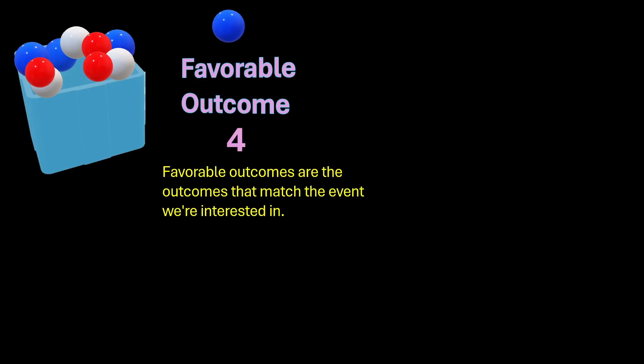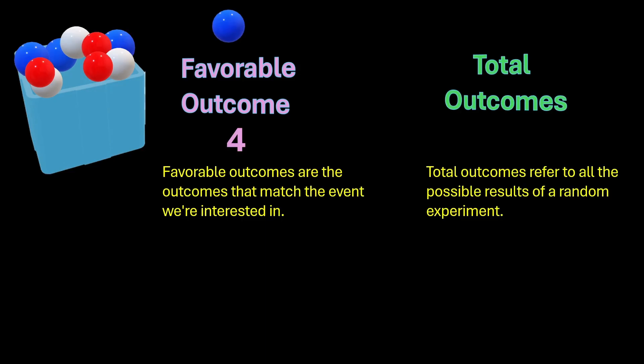Similarly, there is something called total outcomes. Total outcomes refer to all the possible results of a random experiment. In this case, total outcomes are 4 blue plus 3 white plus 3 red, which equals 10.